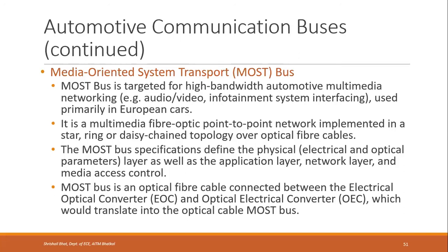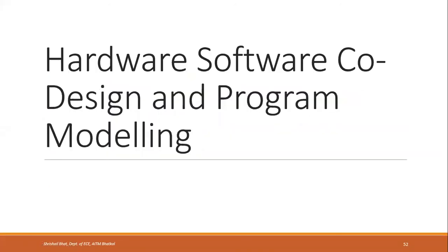In summary, we have seen two examples: application-specific embedded systems (washing machine) and domain-specific embedded systems (automotive domain). In both cases, all the components — sensors, actuators, control unit, and user interfaces — are present. You can take any embedded system around you and identify its sensors, actuators, interfaces, and what the control unit does — this is a practical way of understanding embedded systems. In the next class, we will go through hardware-software co-design and program modeling.